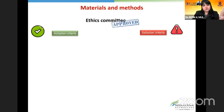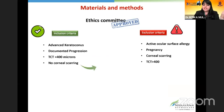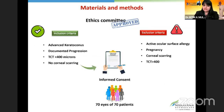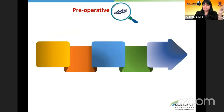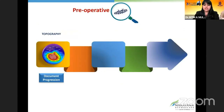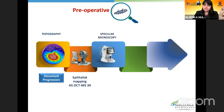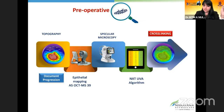We sought ethics committee approval and included 70 eyes of 70 patients who had advanced keratoconus, documented progression, thickness less than 400 microns, and very importantly no scarring. Pre-operatively, we evaluated topography, epithelial mapping, specular microscopy, and performed customized crosslinking with our energy calculator.